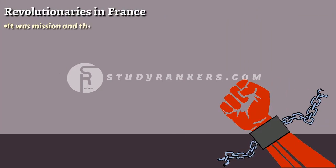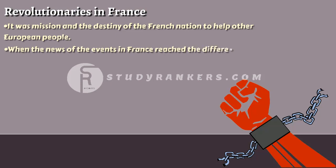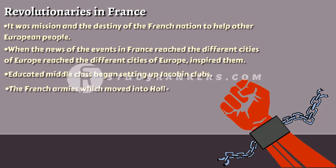The revolutionaries in France viewed this project as ideal. They declared it was the mission and destiny of the French nation to help other European peoples by liberating them from the despotic rule of monarchs and to become a nation like France. When the news of events in France reached different cities of Europe, it inspired them. Educated middle class people set up Jacobin clubs, and their activities and campaigns prepared the way for the French army, which moved into Holland, Belgium, Switzerland, and much of Italy in the 1790s.